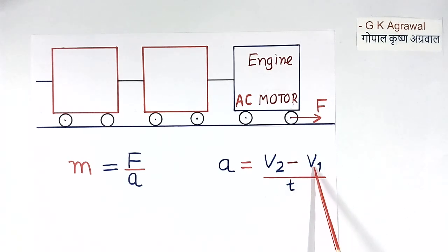Velocity or speed can be measured easily. All vehicles—scooter, motorcycle, or car—have speed measuring instruments. Only thing is, here it will be much more accurate. So this control system will measure V1, V2, and T. Force is already known, so using this formula, the mass of this full train can be calculated.